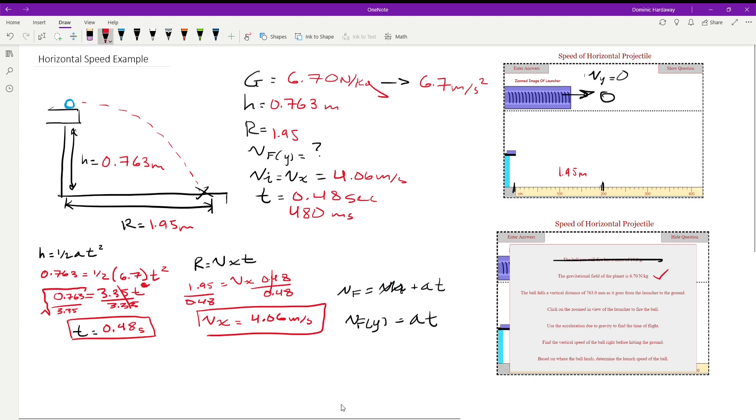And we just plug in our acceleration, which is 6.7, and we're going to multiply that by the t value, which is 0.48. And so we're going to get that the velocity in the y direction is 6.7 times 0.48, which is 3.22 meters per second.